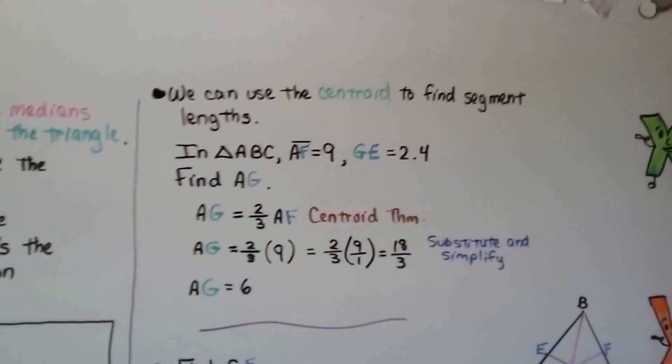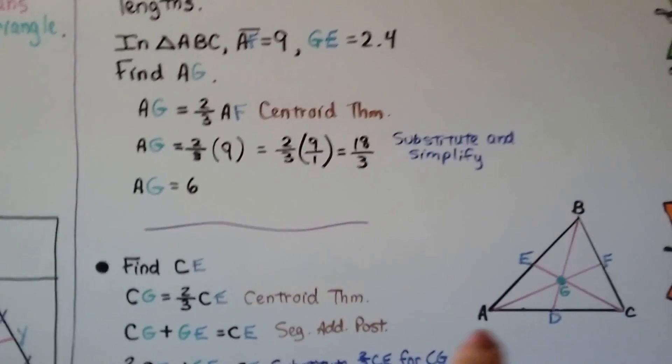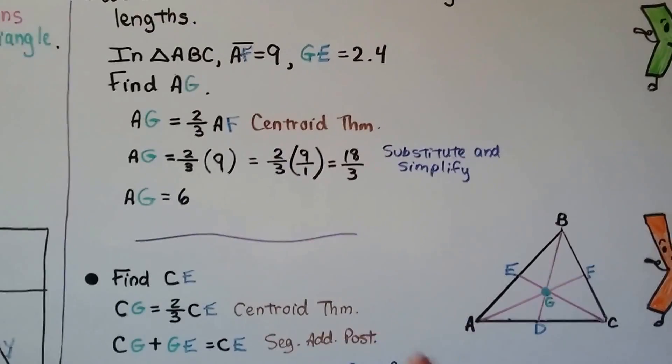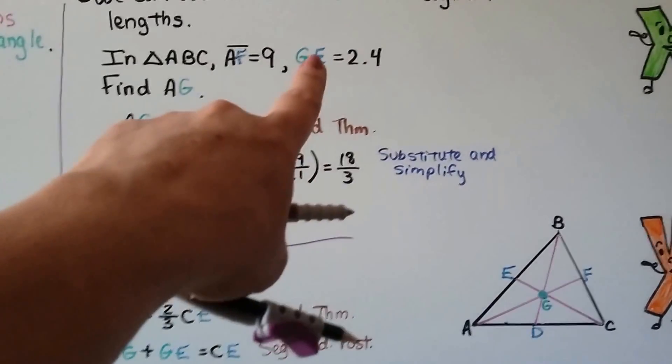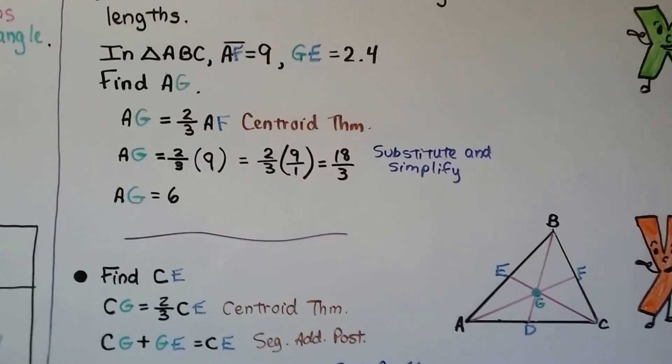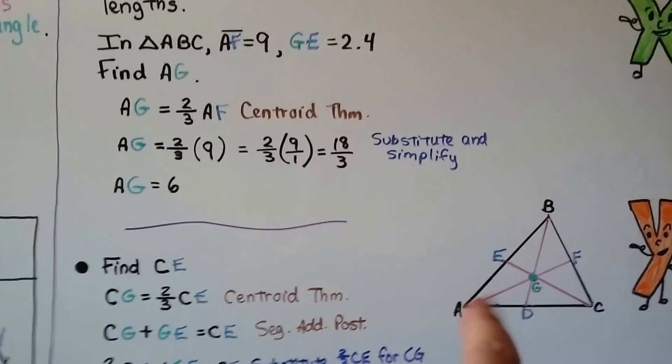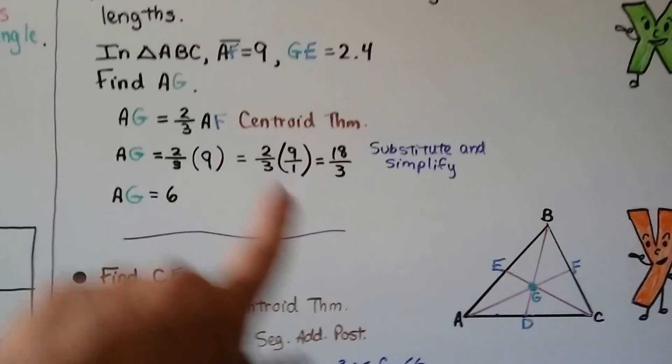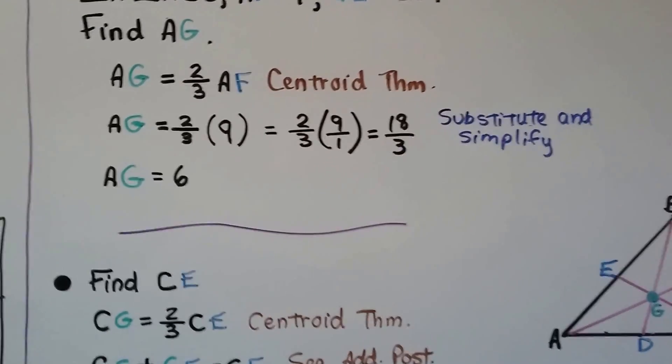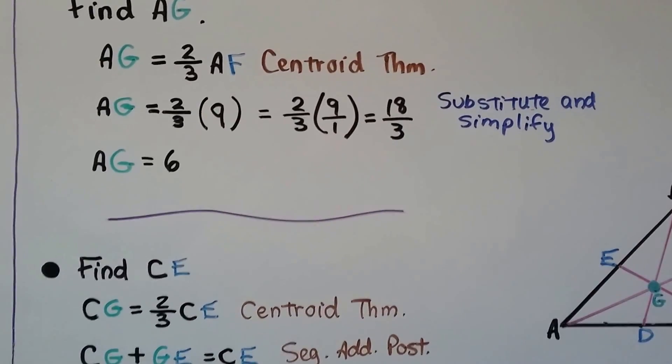And we can use the centroid to find its segment lengths. In triangle ABC, AF, all the way across here, is equal to 9. And GE is 2.4. So this little piece is 2.4. If we need to find AG, this portion right here, AG is two-thirds of AF. Well, we already know that AF is 9. So two-thirds of 9, we do two-thirds times 9. That gives us 18-thirds. That means AG is equal to 6.